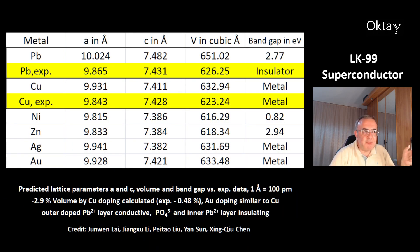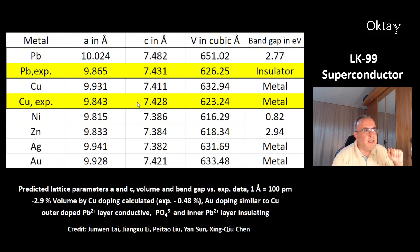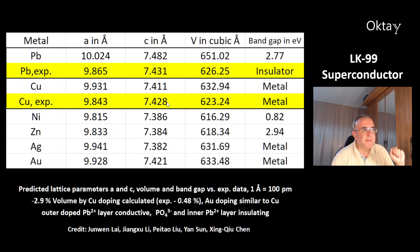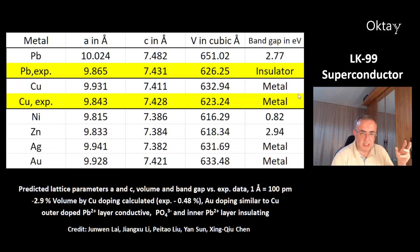These are the predicted lattice parameters A and C, and the volume and band gap versus experimental data, with experimental data shown in yellow. One angstrom is 100 picometers. You can see the model fits nicely with no big difference. The predicted band gap of 2.77 eV confirms that undoped lead apatite is an insulator. For copper-doped LK99, the numbers fit very nicely and the model predicts this compound to be a conductive metal.